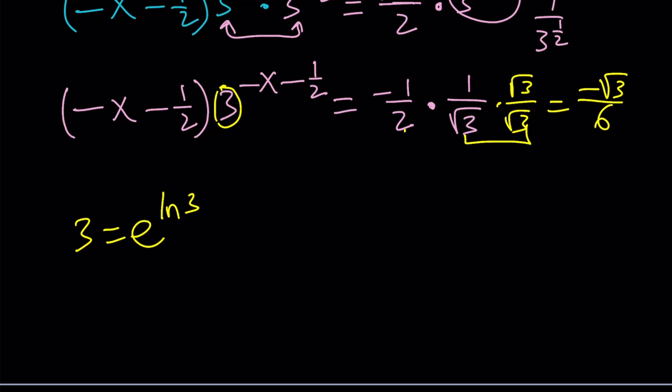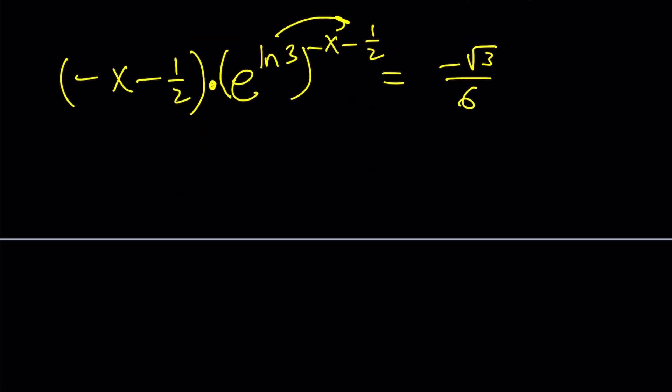So, if you go ahead and do that, replace 3 with e to the power ln 3, you're going to get negative x minus 1 half times e to the power ln 3 to the power negative x minus 1 half. And notice that I haven't really done anything. I just wrote 3 as e to the ln 3. So, I'm not doing anything on the right-hand side. Make sure you don't overdo it or do something that you're not supposed to do. Now, we can go ahead and multiply these. These are exponents. So, we can write this as negative x minus 1 half times e to the power, and I'll probably write it as this expression inside the parentheses times ln 3. I'll put the ln 3 last.